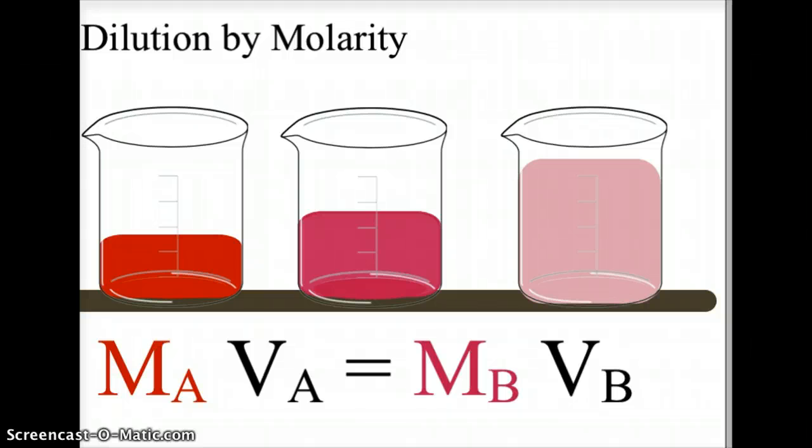The equation for this is MA times VA equals MB times VB.